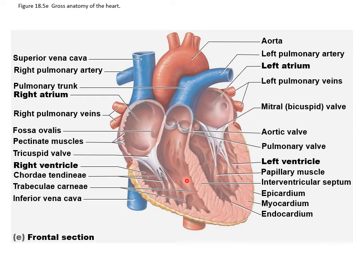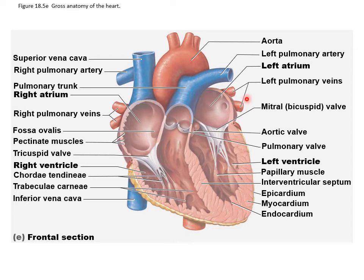The right and left pulmonary arteries take blood from the pulmonary trunk to the lungs — these are deoxygenated. Most arteries are oxygenated, but this is an exception, though they are carrying blood away from the heart, which is usually what arteries do. The pulmonary veins bring blood back into the heart from the lungs — they're veins, but they're oxygenated because they're returning from the lungs after picking up the oxygen.